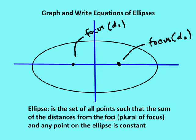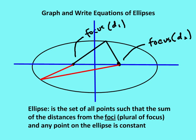The ellipse is the set of all points such that the sum of the distances from the foci — foci is the plural of focus — and any point on the ellipse is constant. That means that if I were to draw a line from one foci and then the other foci to a point on the ellipse, the sum of these two distances would be the same regardless of what point is on the ellipse. The foci serve to identify that relationship which says that the sum of the distances between the two foci will be constant.